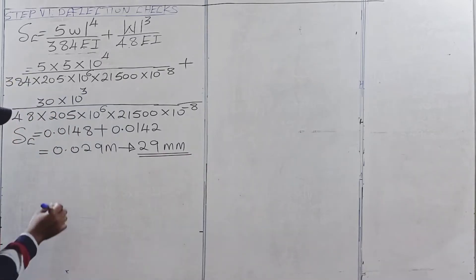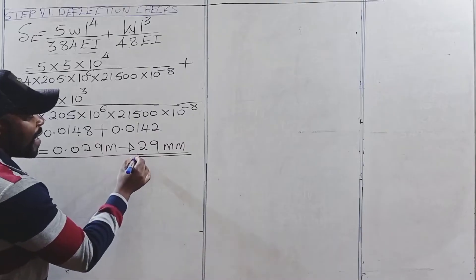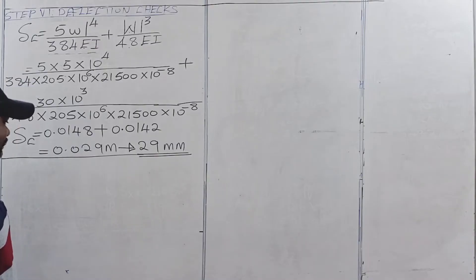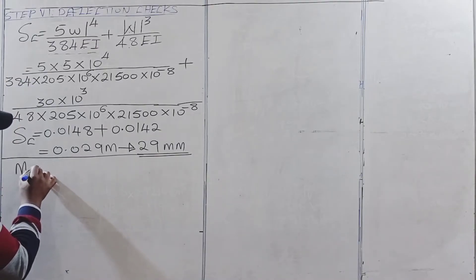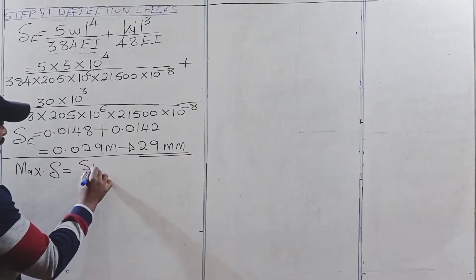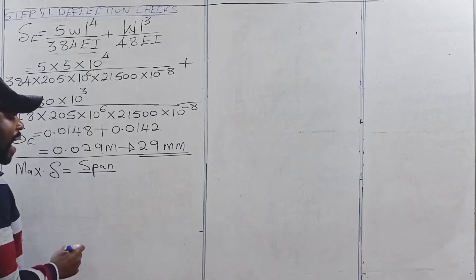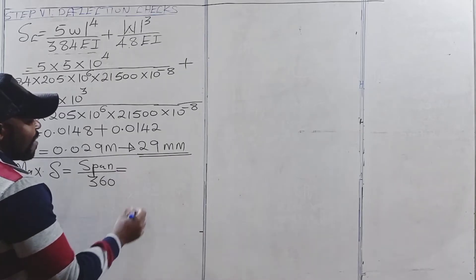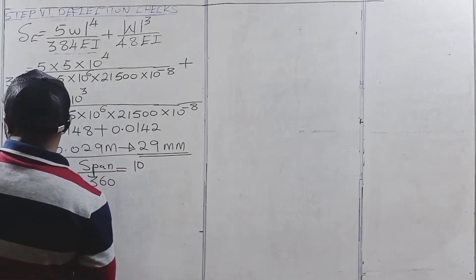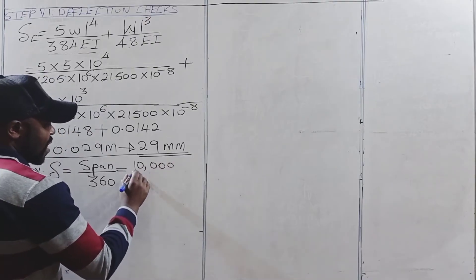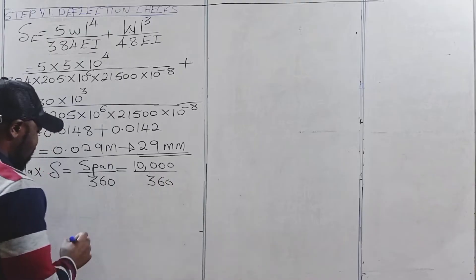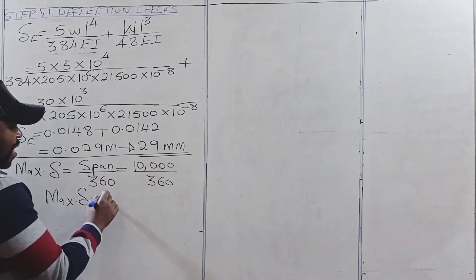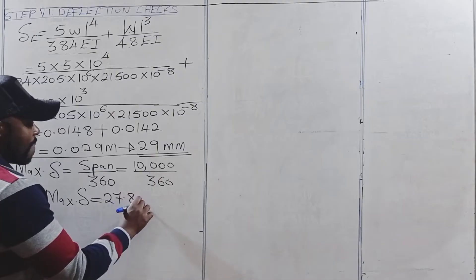For a beam carrying plaster, the maximum deflection is given by span divided by 360. Our span is 10 meters; converting to millimeters gives 10,000 mm, then divided by 360. The maximum deflection for this particular beam is therefore 27.8 millimeters.